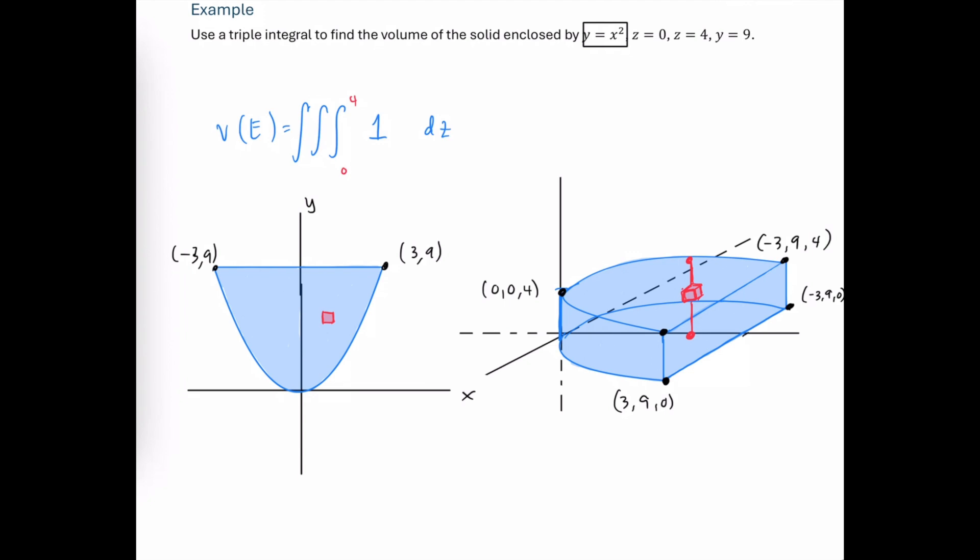However, my tendency is to just avoid doubling because of the fact that it doesn't always work. If I can do something else, I'm going to choose to do something else. So instead, let's integrate with respect to y next. And that would take me from the curve, y equals x squared. It's okay to have x's in the limits of an integrand, if we're not integrating with respect to x. And then the upper limit for the y value would be the y value 9.